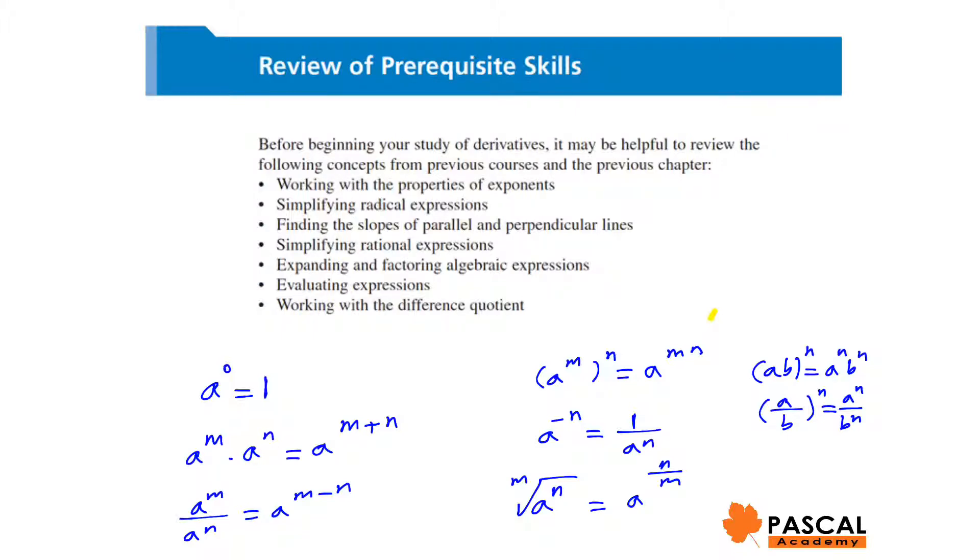Working with the properties of exponents. From the previous grades, we know any number to the power of 0 is 1. When we multiply a to the power of m and a to the power of n, we add up the exponents. That would be a to the power of m plus n.